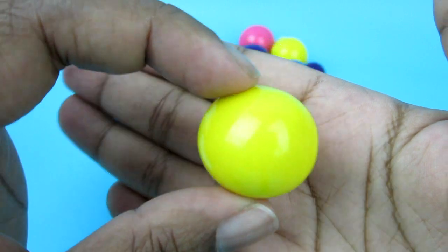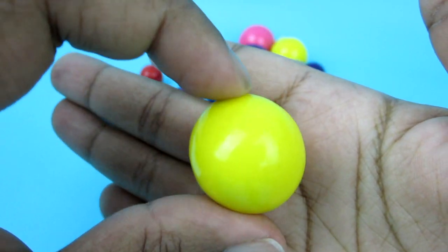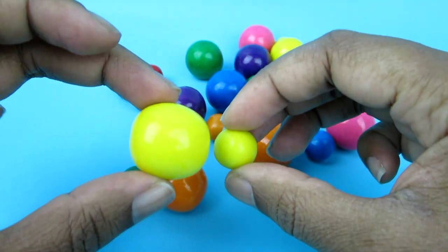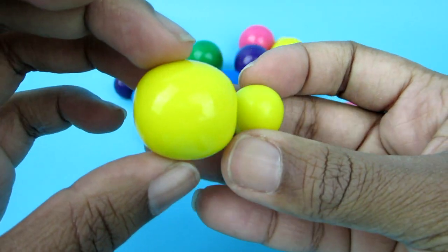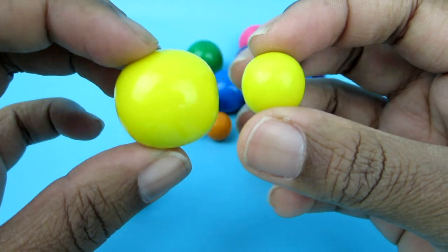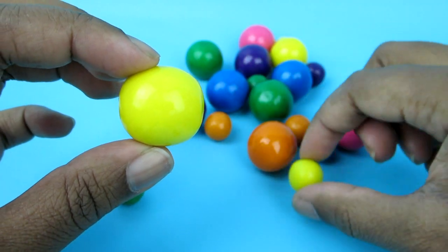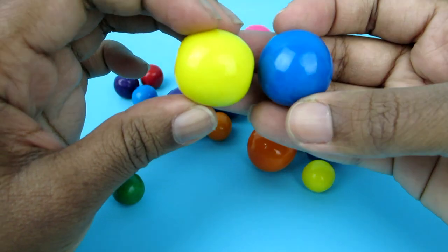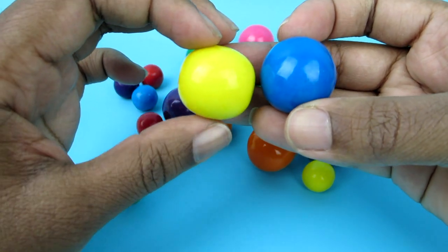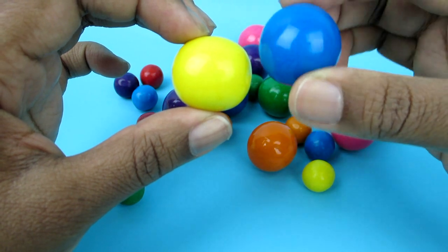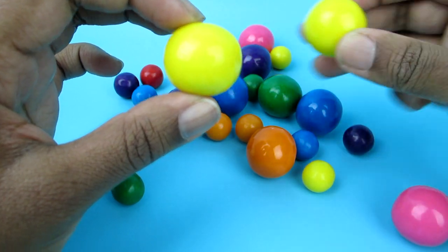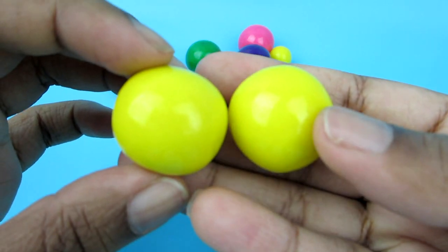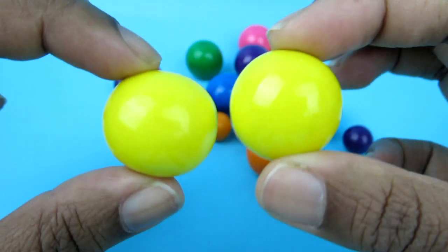Yellow. It kind of looks like the sun, doesn't it? So that's yellow, but no, this is much bigger, this one here is much bigger, so this is not a match. Okay, these are the same size, but no, this one's blue. But these are both yellow and they're both big, so we have a match. Yay!